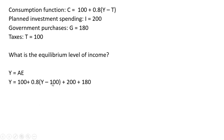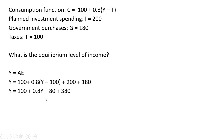Here's our consumption function. In the consumption function, I'm putting in 100 for T. We've got our investment spending of 200 and government purchases of 180. I'm going to simplify this — take 0.8 and multiply it through by what's in parentheses. We get 0.8Y, and 0.8 times negative 100 is minus 80. Simplifying the right-hand side further, we get Y equals 0.8Y plus 400, since 380 minus 80 is 300, plus 100 is 400.